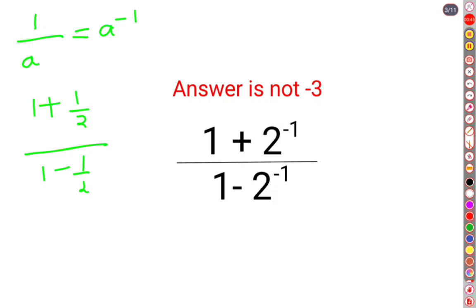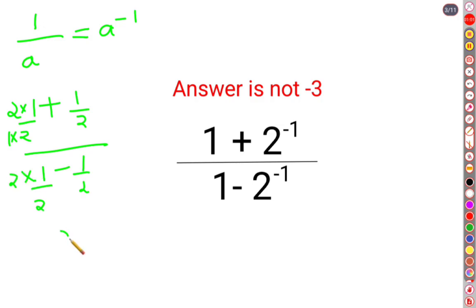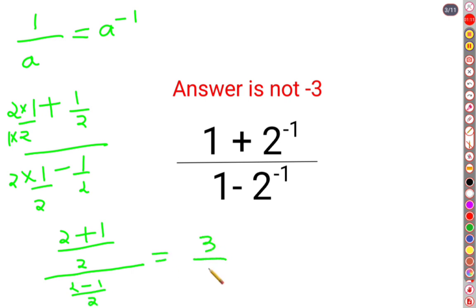You can directly add the numerators only if the denominators are also the same. But since the denominator here was not 2, you multiply 1 by 2, and do the same for the numerator. So you get 2 plus 1 upon 2, and the lower fraction is 2 minus 1 upon 2 — giving you 3/2 divided by 1/2.